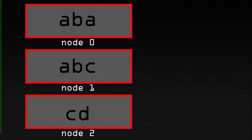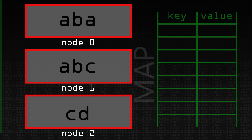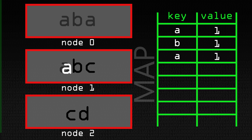The Map stage takes this and puts it into what's called a key-value pair. We take each word as the key — for each word, we map it so the word is the key and we put the number one as the value. So we get A1, B1, A1, A1, B1, C1, C1, D1.